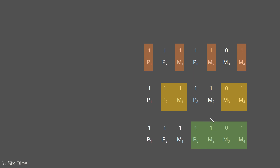Parity bit 3 indicates the error could be at message bit 2, message bit 3, or message bit 4. However, since parity bit 1 is satisfied, it tells us that message bits 1, 2, and 4 do not have errors. We can therefore cross out message bit 4 from parity bit 3's candidates, message bit 2, and message bit 1 from parity bit 2's candidates. We are left with only one candidate.